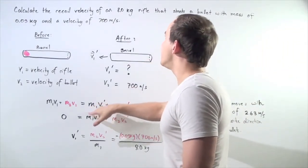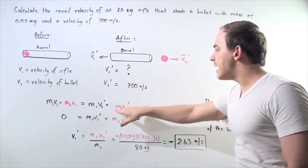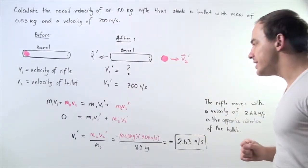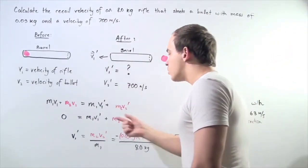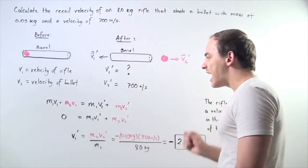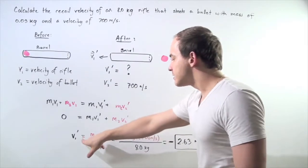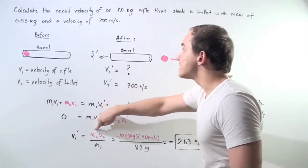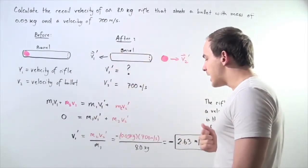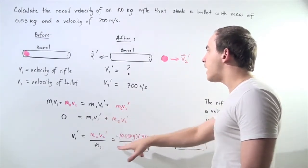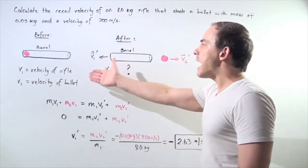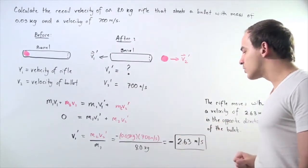We know M1 is 8 kilograms and M2 is 0.03 kilograms. So we can rewrite this equation and solve for V1 prime, the recoil velocity. That equals mass of our bullet multiplied by the velocity of the bullet divided by the mass of the barrel rifle system, 8 kilograms.